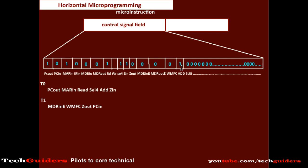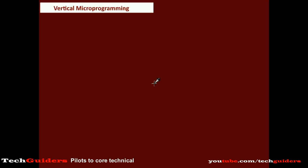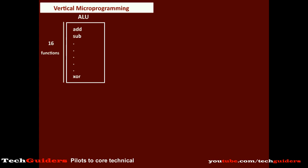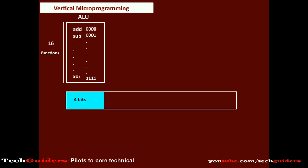The solution is to move to a vertical approach in which we keep the micro instructions shorter, though sometimes the number of micro instructions may increase. This is possible because there are some control signals which cannot be active at the same time — in other words, some control signals are mutually exclusive. For example, consider these 16 ALU functions: there are 16 ALU signals and among them only one signal can be active at a time. So instead of reserving 16 bits for these 16 ALU functions, we can encode these 16 signals using 4 bits. With 4 bits we can specify each ALU signal and only one will be used at a time. So in vertical microprogramming, instead of reserving 16 bits we reserve just 4 bits for these 16 signals.